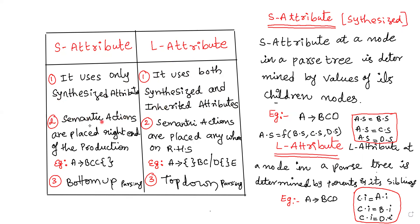In the second point, semantic actions are placed at the right end of the production. You can see this is called as a production. Now we are going to write semantic actions here. If you place the semantic actions at the end, this is called as S-Attribute.